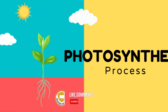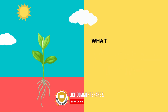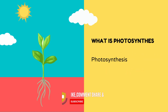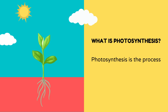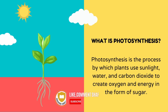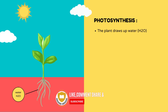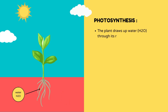Today we learn about the photosynthesis process. What is photosynthesis? Photosynthesis is the process by which plants use sunlight, water, and carbon dioxide to create oxygen and energy in the form of sugar. The plant draws up water (H2O) through its roots.